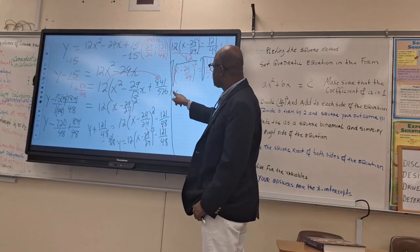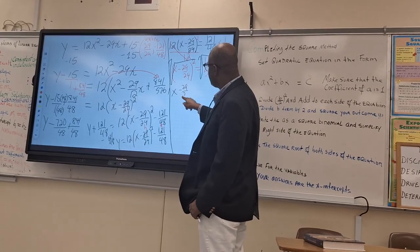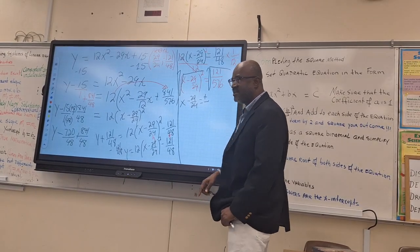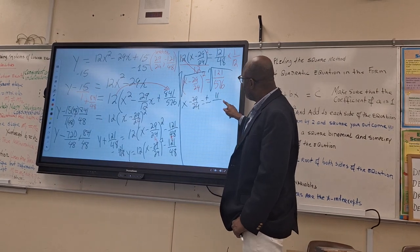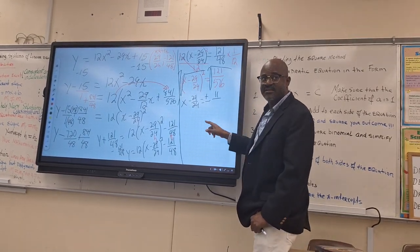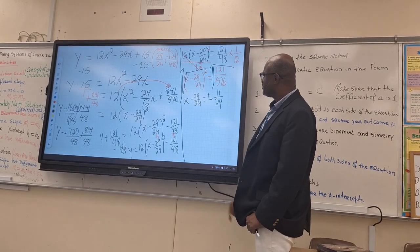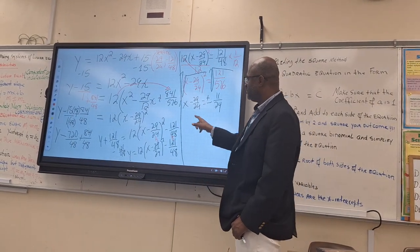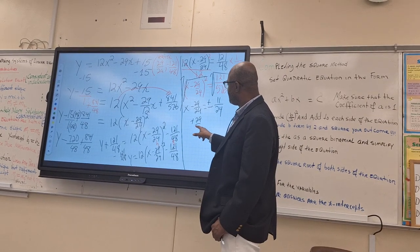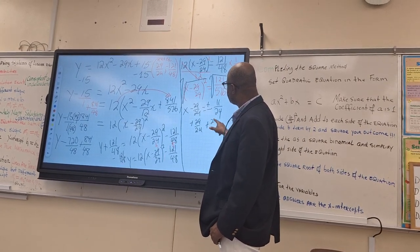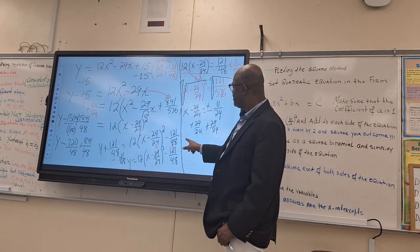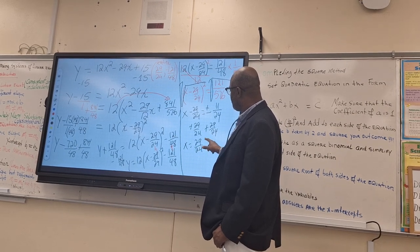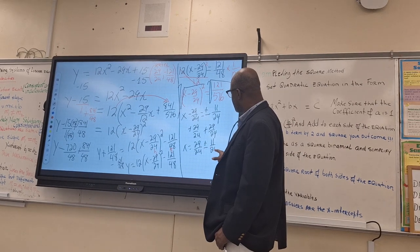And we end up with x minus 29 over 24 is equal to plus or minus. You should know what square root of 121 is. 11. That's 11. And we know what square root of 576 is. 24. Now, we're ready to solve for x by doing what? So, you add 29 over 24 on each side.